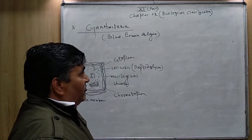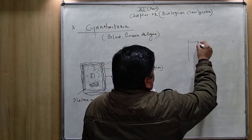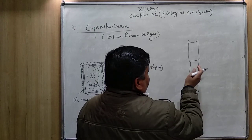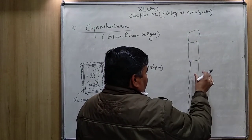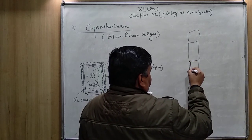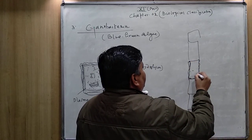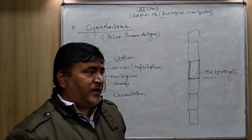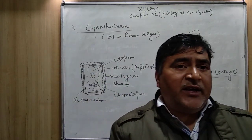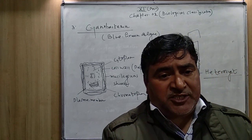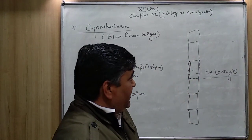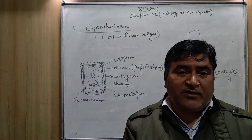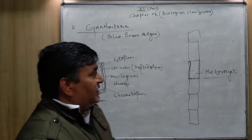There is a diagram in the NCERT book about Oscillatoria and Nostoc. The body of Nostoc, a type of cyanobacteria, is filamentous — many cells are arranged in a filament. In the filamentous form, a particular cell may be adapted for nitrogen fixation, and this specialized cell is called a heterocyst. The heterocyst is found in some cyanobacteria like Nostoc and helps in the process of nitrogen fixation.